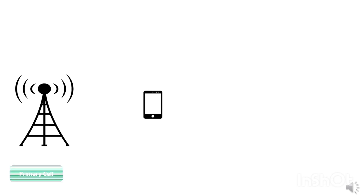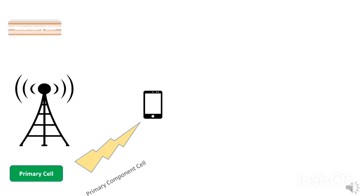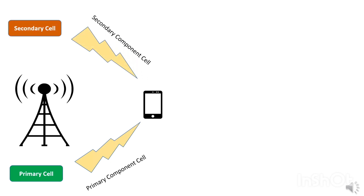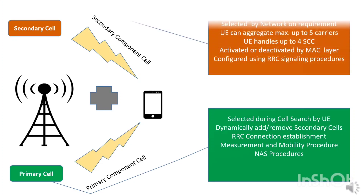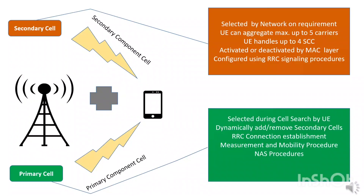Let's see how CA works. When there is no CA, data is transmitted using a primary component carrier and the serving cell is called the primary serving cell. In a CA scenario, data is transmitted by aggregating one or more carriers with the primary component carrier, and the serving cell is called the secondary serving cell to support wider bandwidth. Instead of providing the phone with just one connection, the tower connects the phone using two or more connections at the same time. The primary serving cell is selected by the UE during cell search and can never be deactivated or removed; it can only be changed at handovers, while secondary cells are added or removed as per requirement. The primary cell handles all RRC and NAS procedures and manages UE mobility, while secondary cells are configured as added. A maximum of 5 carriers can be aggregated, meaning a maximum of 4 secondary cells, and the maximum allotted bandwidth is 100 MHz.